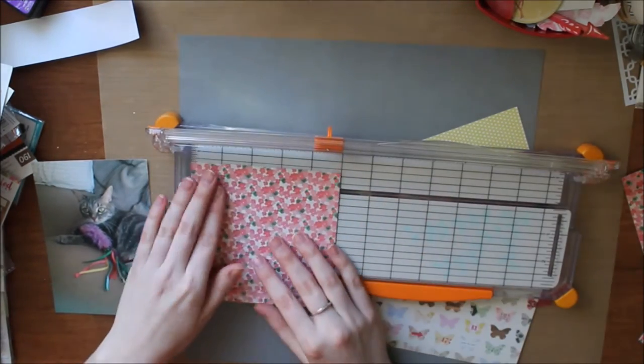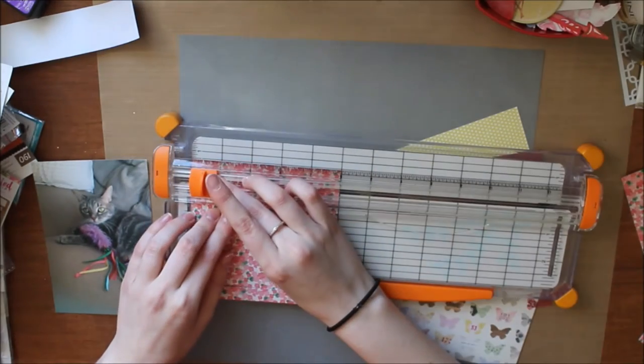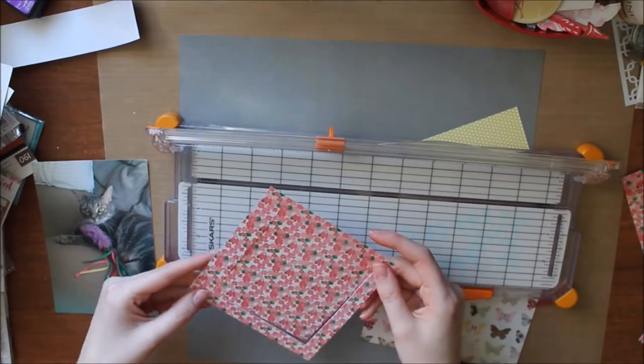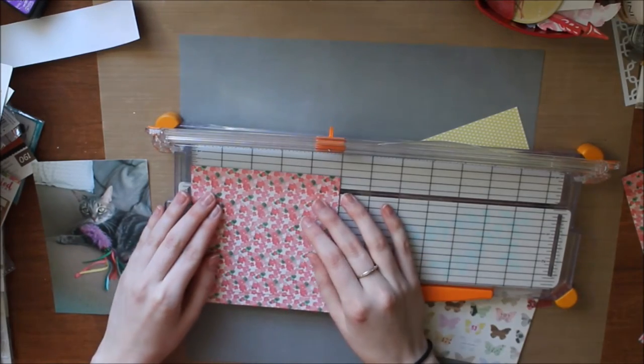Now if your cutter doesn't have this I'd probably recommend using a pencil and an exacto knife to make your marks on the back sides of your paper and that'll come out better for you.